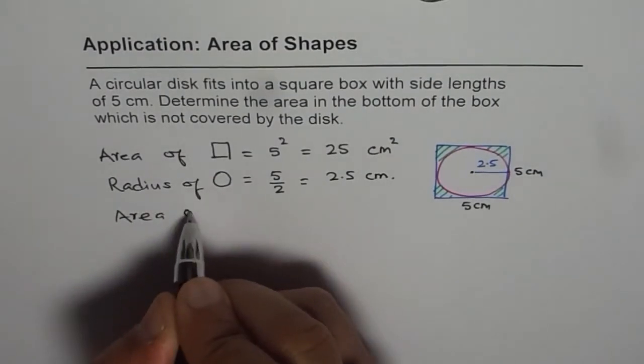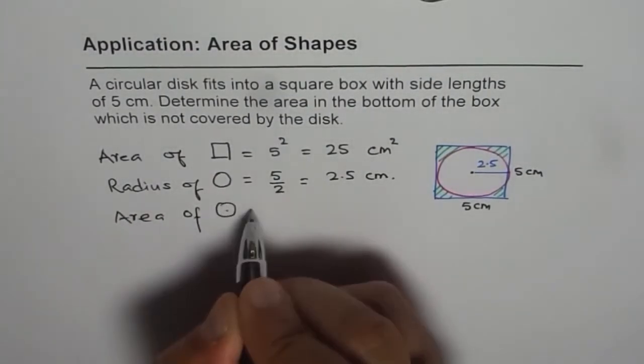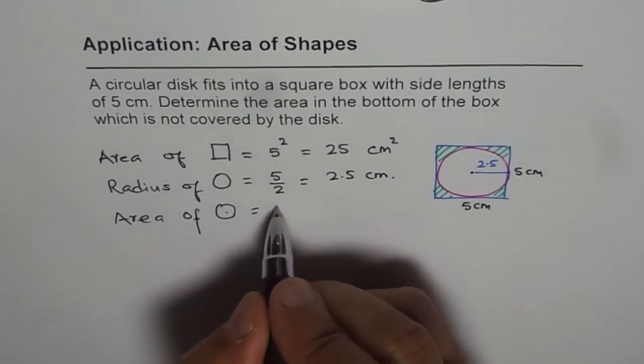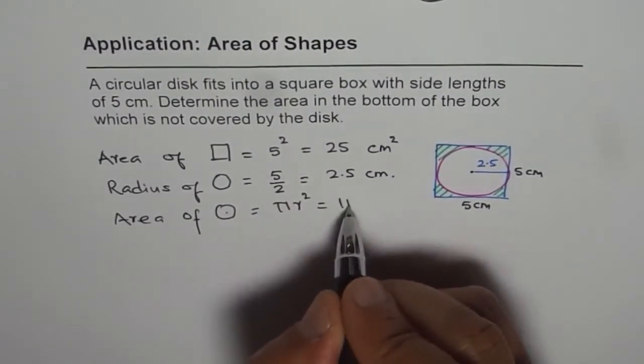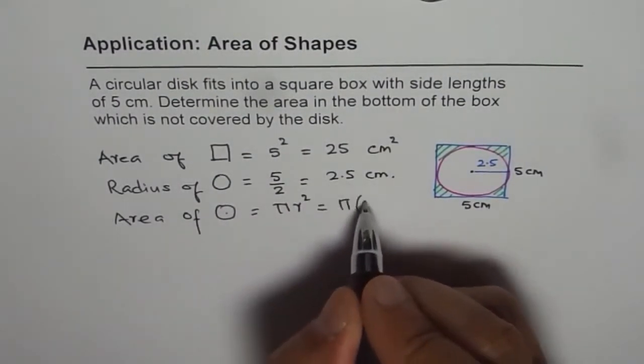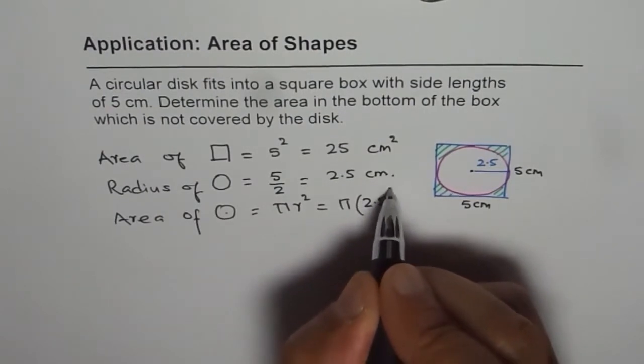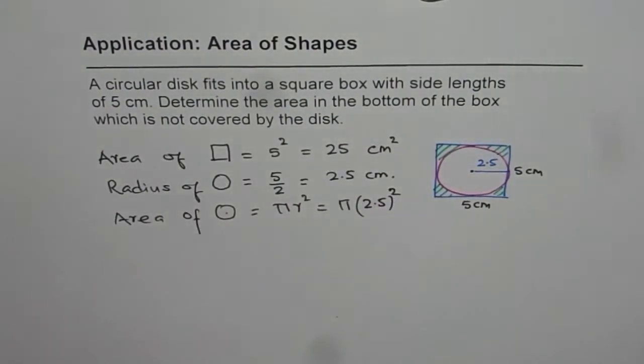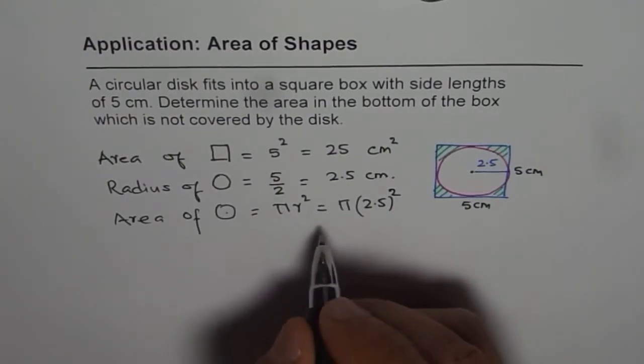The area of the circle is pi r squared, so it is pi times 2.5 squared. Let's use a calculator: pi times 2.5 squared equals 19.6349. So the answer rounded is 19.6 centimeters squared. That is the area of the circle.